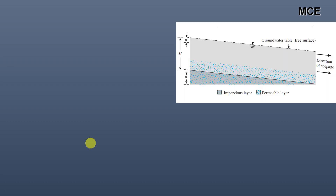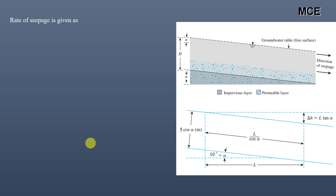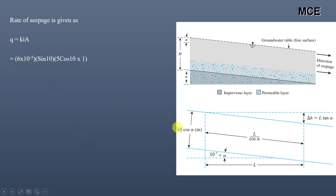Now we can calculate the rate of seepage through the permeable layer. The rate of seepage is given by q = k × i × A, where k is the coefficient of permeability, i is the hydraulic gradient, and A is the cross-sectional area. k is given as 6 × 10⁻⁵ m/s and hydraulic gradient was calculated as sin(10°).